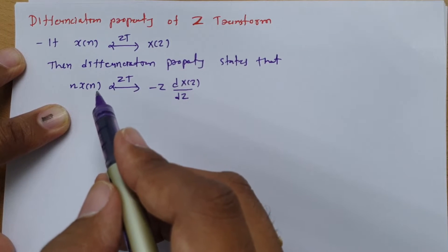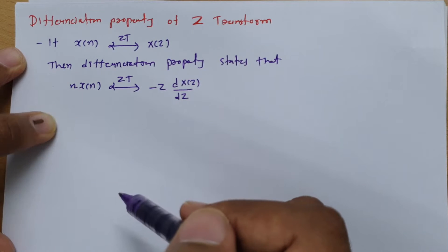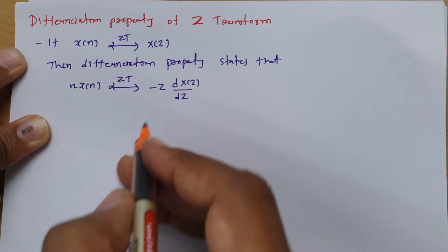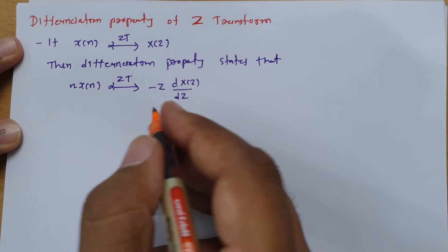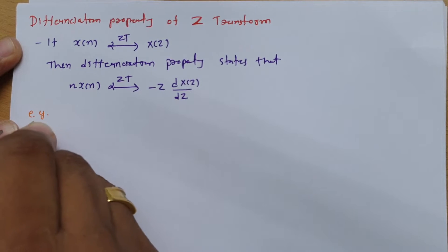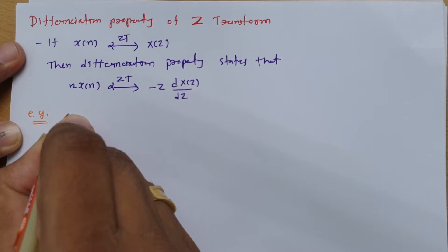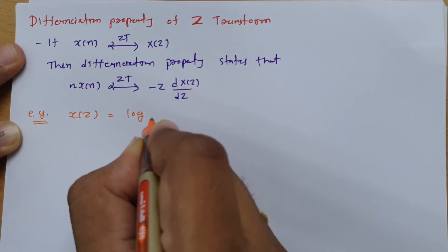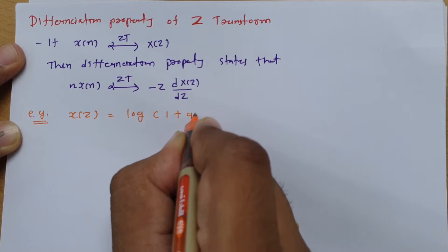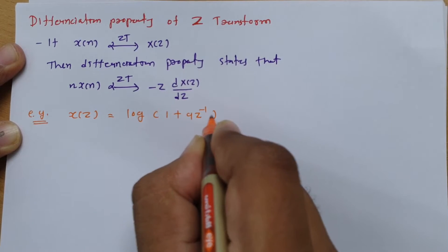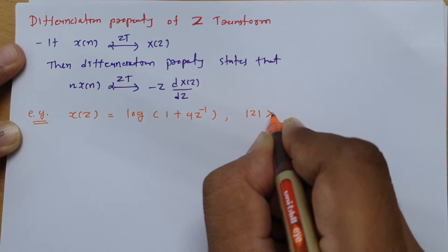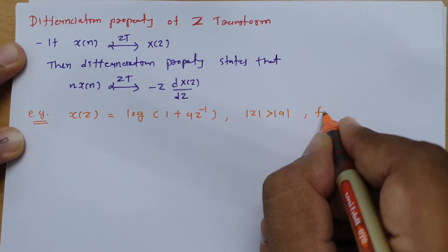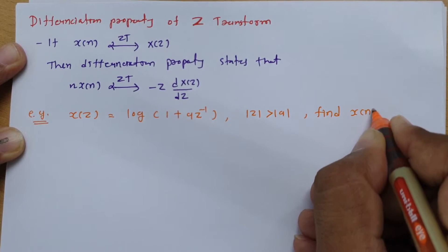This is how we can utilize the differentiation property of Z-transform. Now I will explain one example that will give you an idea about how to use this property. The question is: if X(z) = log(1 + az⁻¹), where the ROC is |z| > |a|, find X(n).